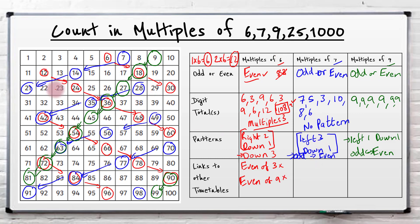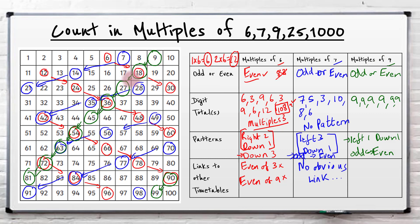Now if you look at the 7s, is there any link between the 7s and the other times tables? Not really - you'd be pushing it to say there was. They're very much on their own, and this is why the 7 times tables can be tricky, because they don't link with any of the other times tables. There's no obvious link. For the 9 times tables, it's linked to the 3 times tables - every number in the 9 times tables is also in the 3 times tables. And it's also linked to the 6 times tables - the evens are in the 6 times tables.